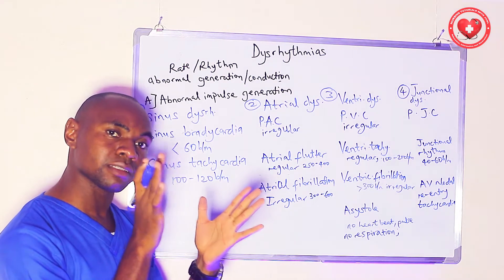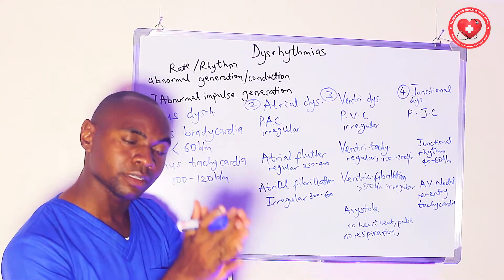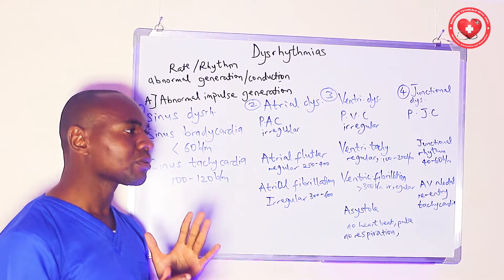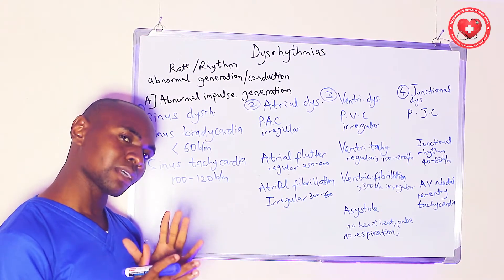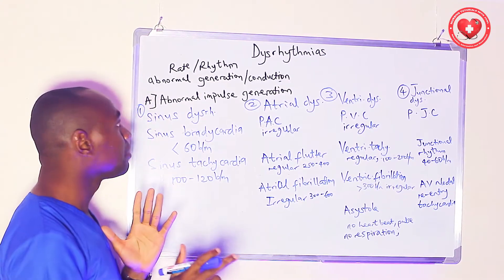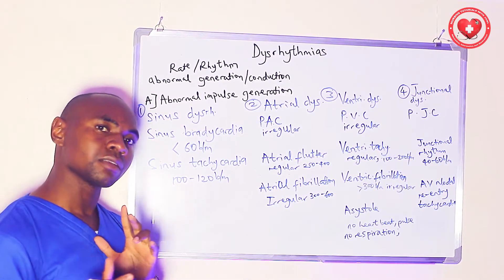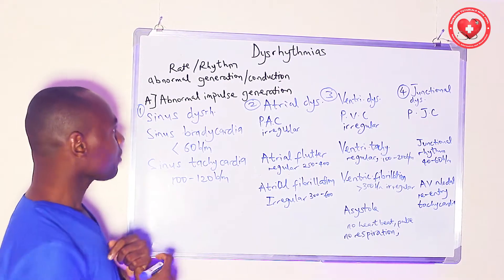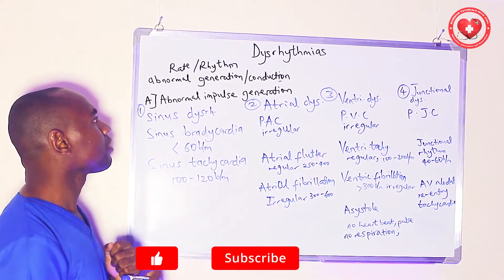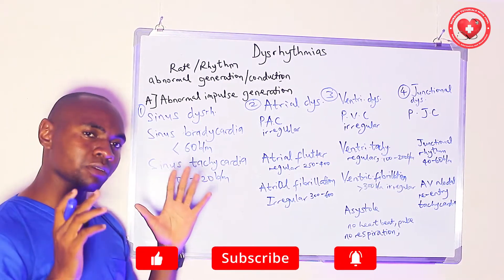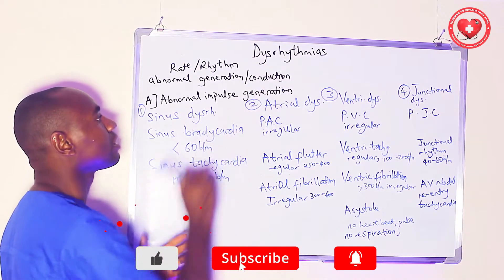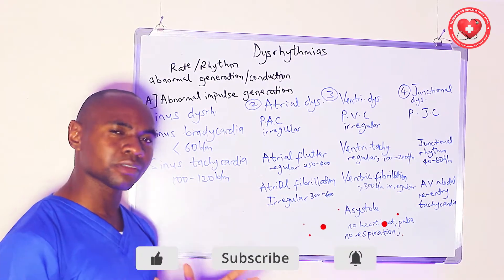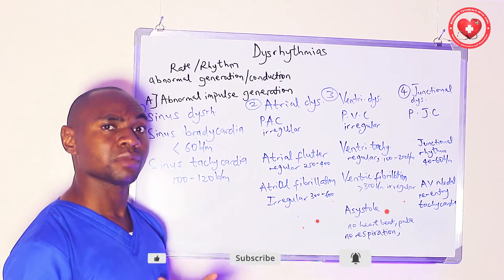For example, you may have a scattered pattern like one, two, one, one, two — just irregular like that. So those are the two types of rhythm abnormalities: it could be regular or irregular. For a better understanding of dysrhythmias, there are various types.